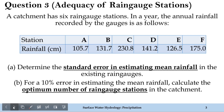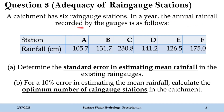Let's read question number three. A catchment has six rain gauge stations. In a year, the annual rainfall recorded at each station is as follows: stations A, B, C, D, E, and F, with corresponding rainfall values at each station given in units of centimeters.